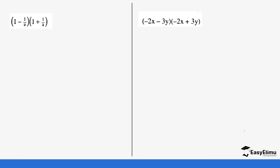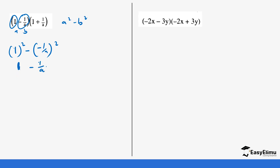So remember our expression is a squared minus b squared. You can take this as your a and your b — here b is negative one over a. So it becomes a squared minus b squared, which is one squared minus (negative one over a) squared. This becomes one minus one over a squared. You can remove the fraction by multiplying through by the LCM, which is a squared. So it becomes a squared minus one.